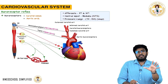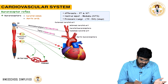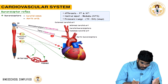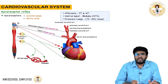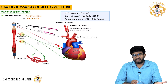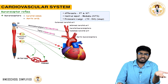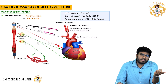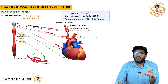The medulla understands whether pressure is going up or down and responds via efferents. If MAP is increasing, the CNS inactivates the sympathetic nervous system and activates the parasympathetic nervous system. When parasympathetic is activated, heart rate decreases and BP decreases. When sympathetic is inhibited, there is no norepinephrine or adrenaline, so blood vessels relax and BP decreases. This is how the baroreceptor reflex works.